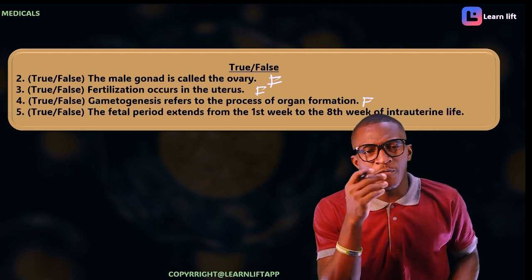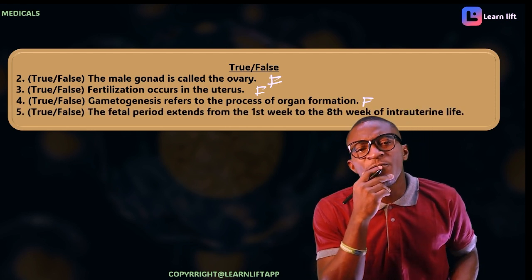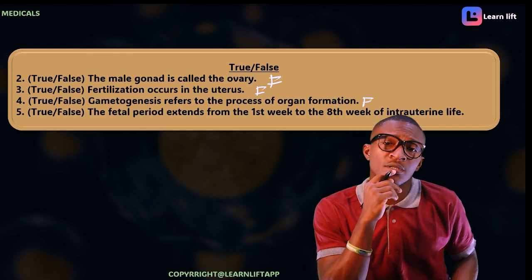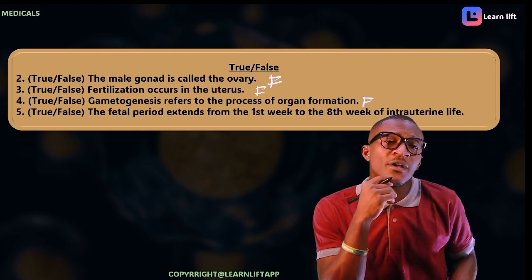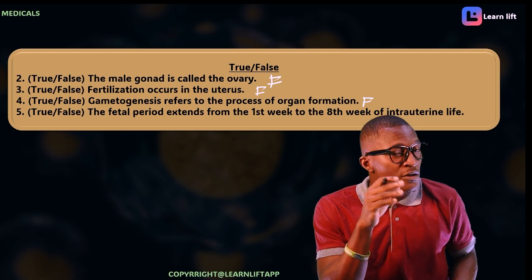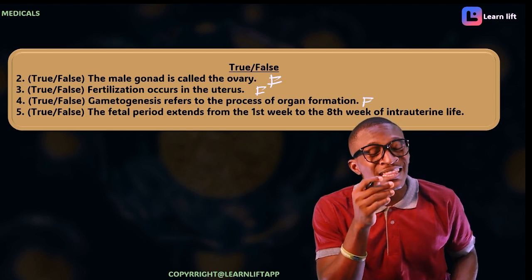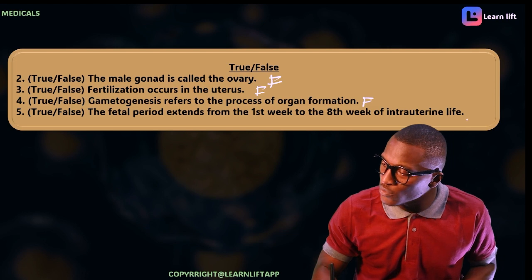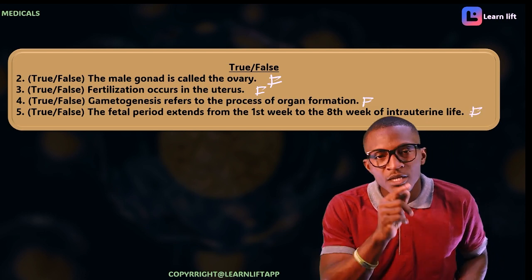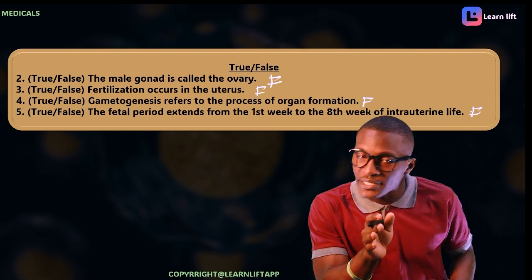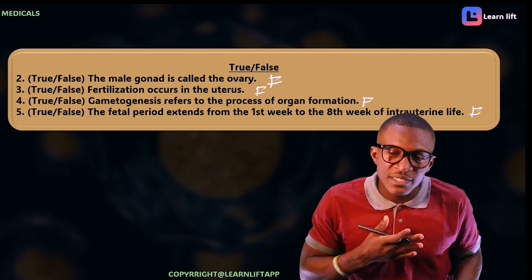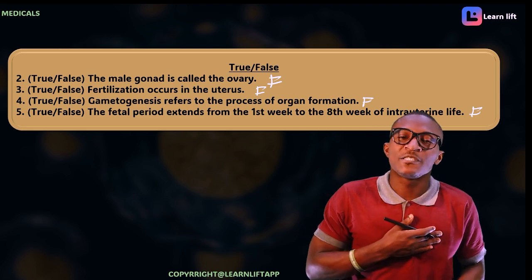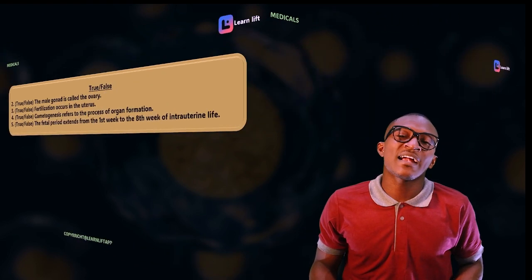True or false: the fetal period extends from the first week to the eighth week of intrauterine life. Does the fetal period extend from the first to eighth week? No — the fetal period extends from the ninth week to the ninth month. So this is also false. Did you get it? Success is internal — say it to yourself.